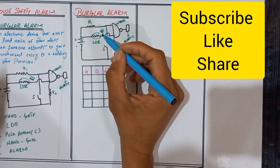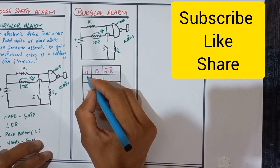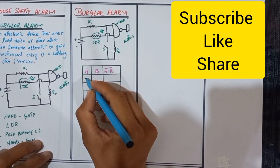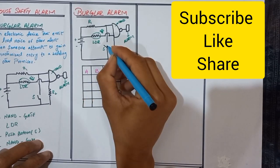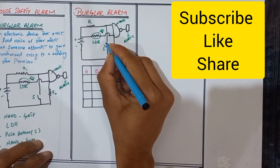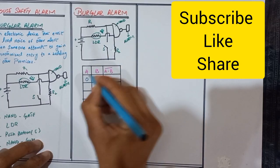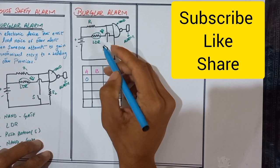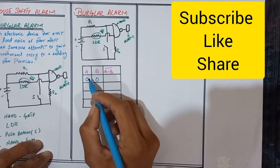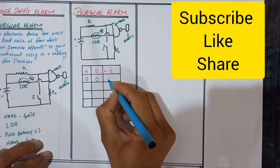So here we discuss the truth table of the Burglar Alarm when A is zero. A is zero when it is closed and B is zero when no light falls upon it. So when A is zero, B is zero, then output we get 1.